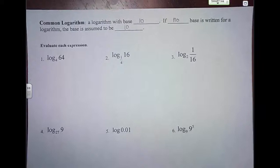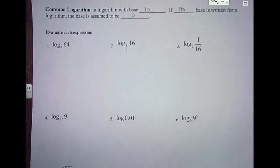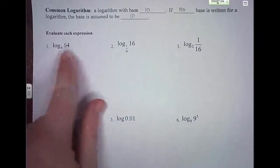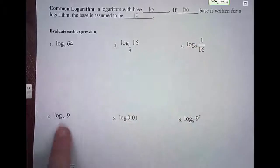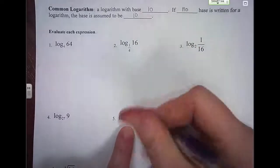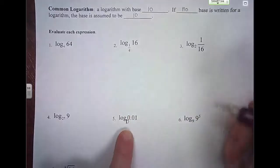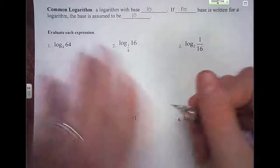One thing to note here: common logarithms. A logarithm with a base of 10 is a common logarithm. When you look through some of these problems, you see bases of 4, 1/4, 2, 27. But if no base is written, it is assumed to be a base of 10, and that's called a common logarithm.